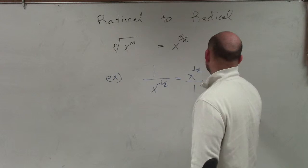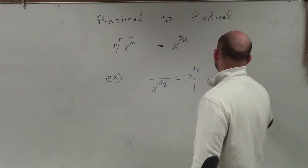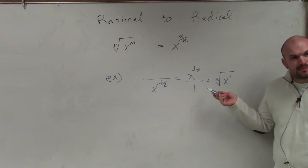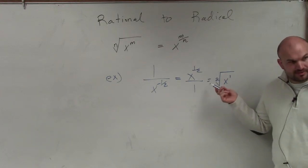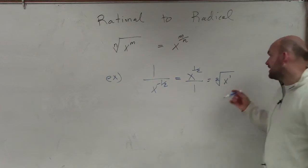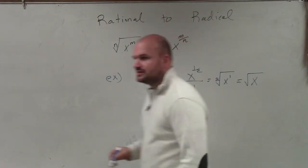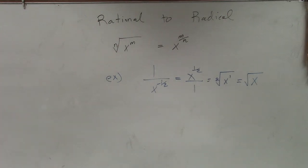So this would equal the second root of x to the first power. But we always assume when we're taking the root, if we don't have a 2 there, it's a square root. And we don't need to write x to the first power. So therefore, our final answer would just be square root of x. If you wrote it as the second root of x to the first power, that's perfectly fine as well.